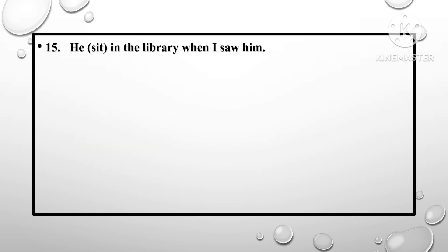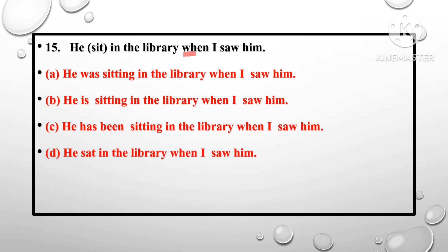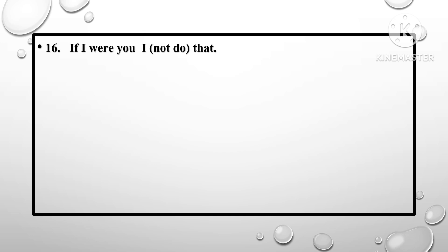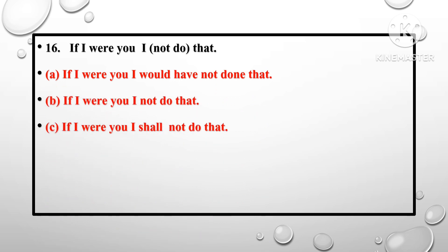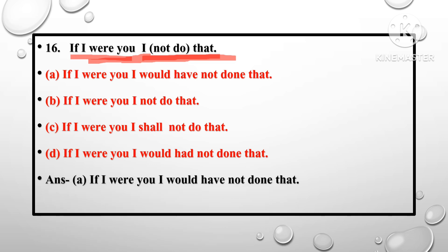Question number 15: 'He sit in the library when I saw him.' — Option A. Question number 16: 'If I were you, I not do that.' Options: if I were you, I would have not done that; I did not do that; I shall not do that. The correct answer is 'if I were you, I would have not done that' — Option A is correct.